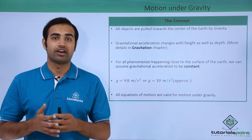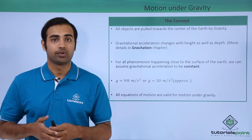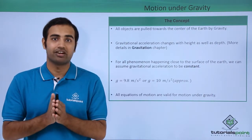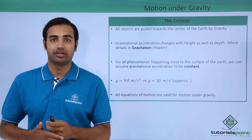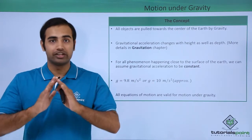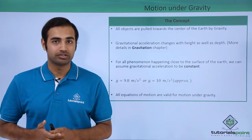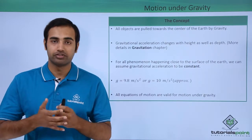Now, all equations of motion are valid for motion under gravity. Why? Because the acceleration value is constant, which is equal to 9.8 meters per second square. So we will be very easily using the equations of motion to solve problems of free fall under gravity.